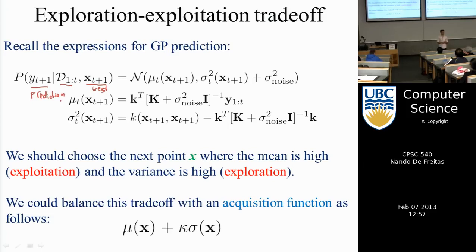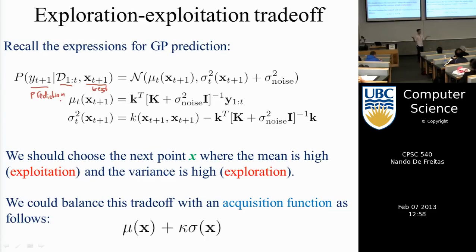To maximize that function you'd pick an x that makes both the mean and the variance large. If you think exploring is more important, choose a large kappa. If you think the mean is more important, choose a small kappa, say 0.01. This is the simplest way to do it, though it's problematic for some reasons I'll mention soon.